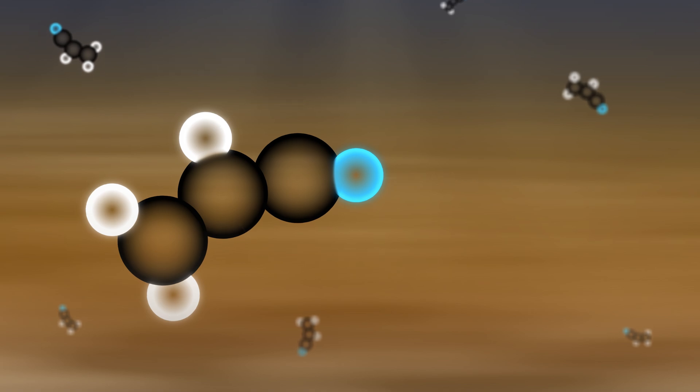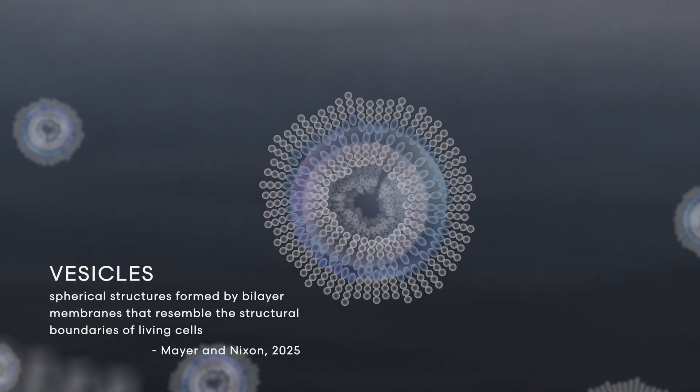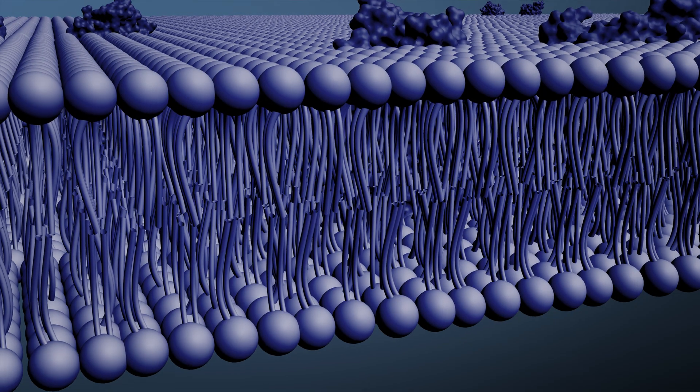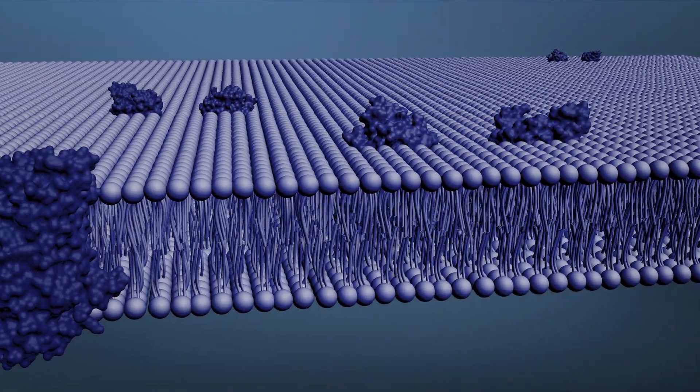Scientists think that such amphiphile molecules could cluster together within Titan's lakes to form hollow, double-layered spheres called vesicles. These vesicles strongly resemble cell membranes on Earth, making the discovery of acrylonitrile exciting.